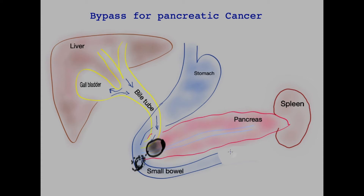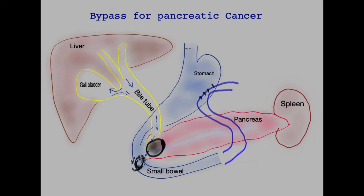Surgeons may perform a bypass operation if an initial attempt at surgical resection fails due to the advanced nature of the cancer itself, or if there is evidence of metastatic disease. A loop of bowel is mobilized up towards the stomach and a new join made with the stomach, thus allowing the food coming into the stomach to go directly into the small bowel and thus bypassing the obstruction. This may be performed through keyhole or as an open operation.